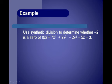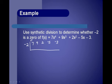Let's use synthetic division to determine whether negative 2 is a zero of the function. If we're trying to determine whether negative 2 is a zero, then we're just going to do synthetic division by negative 2. We start with our highest power: 7x to the 4th, then 9x to the 3rd, 2x squared, negative 5x, and negative 3.